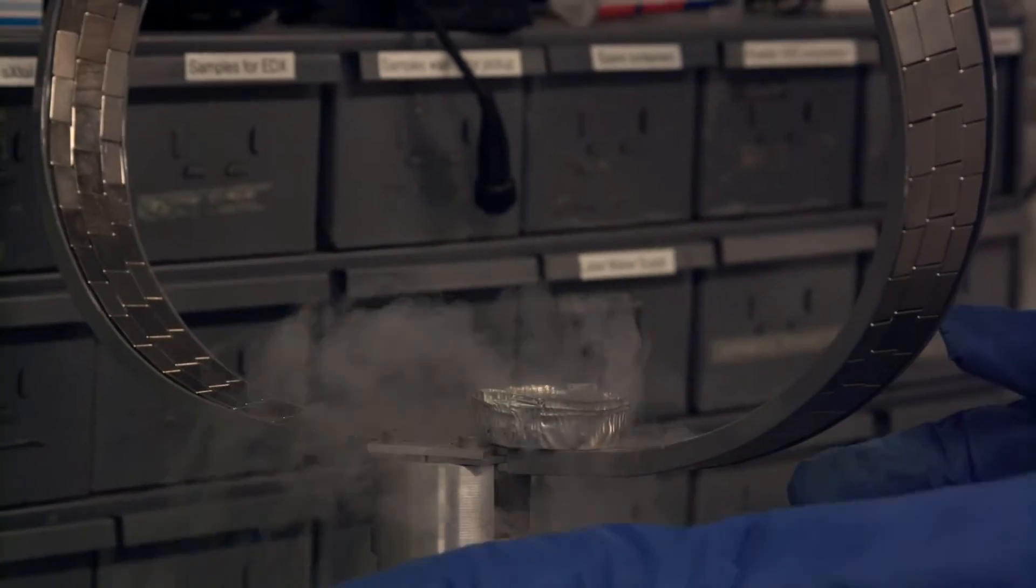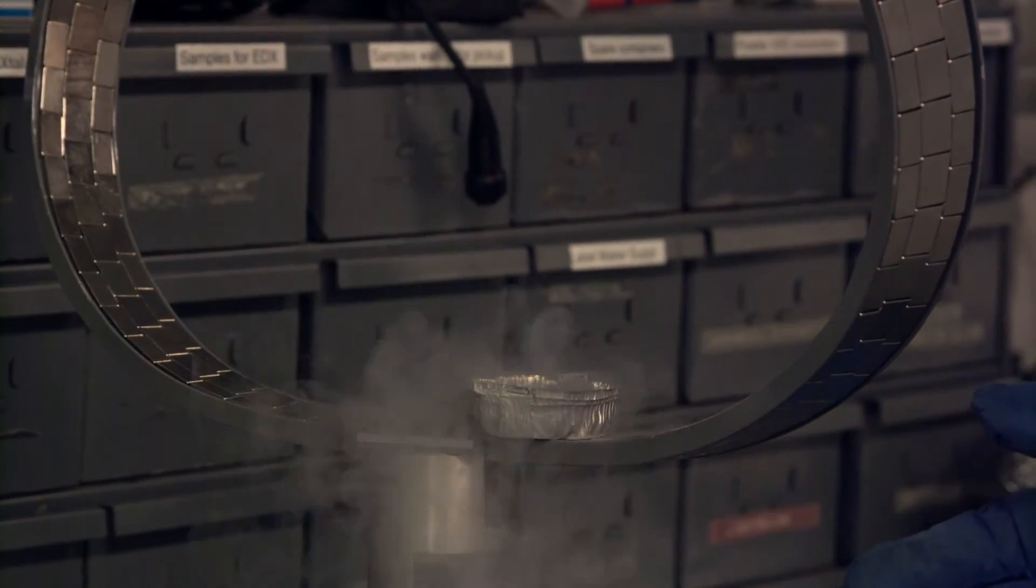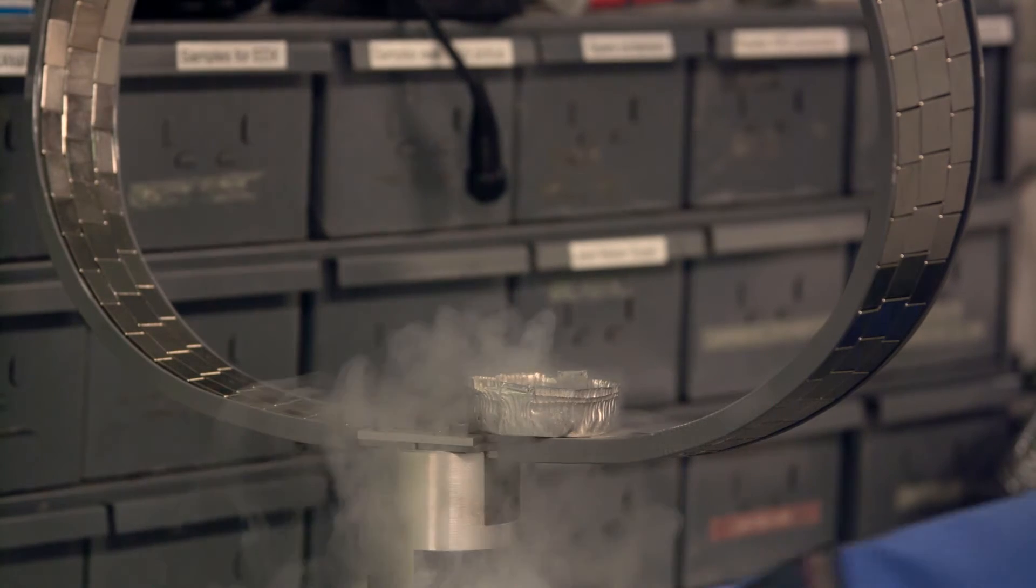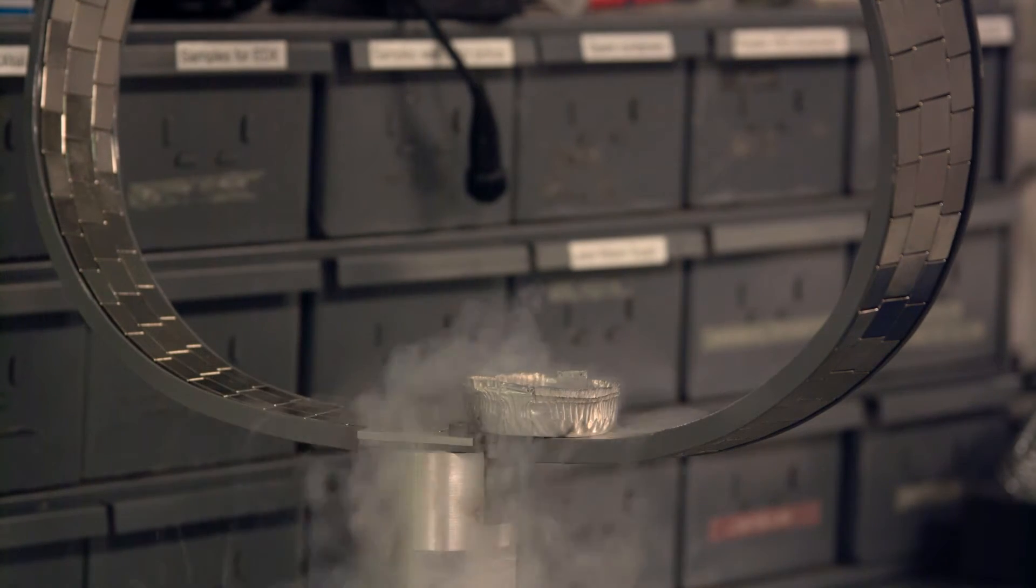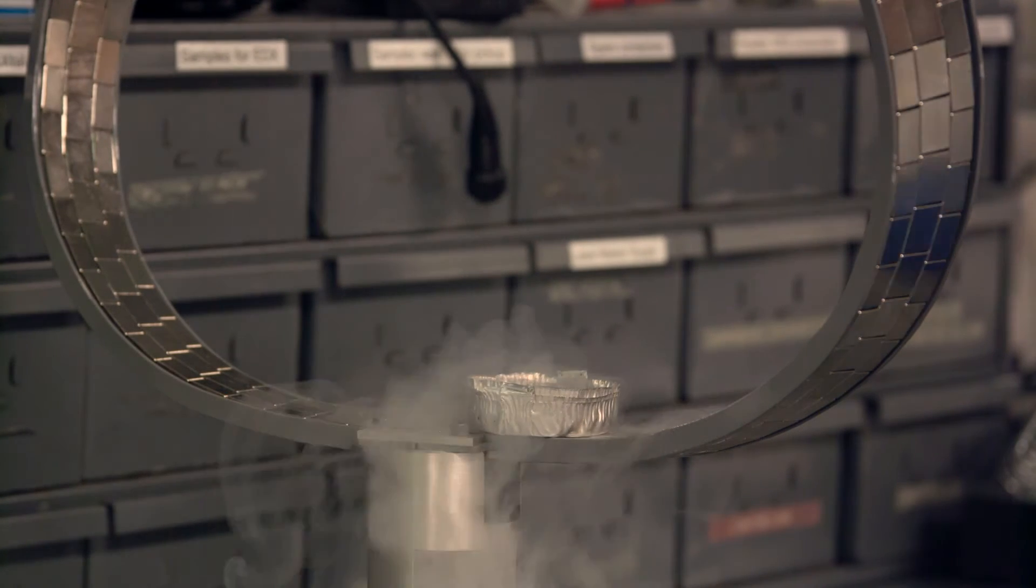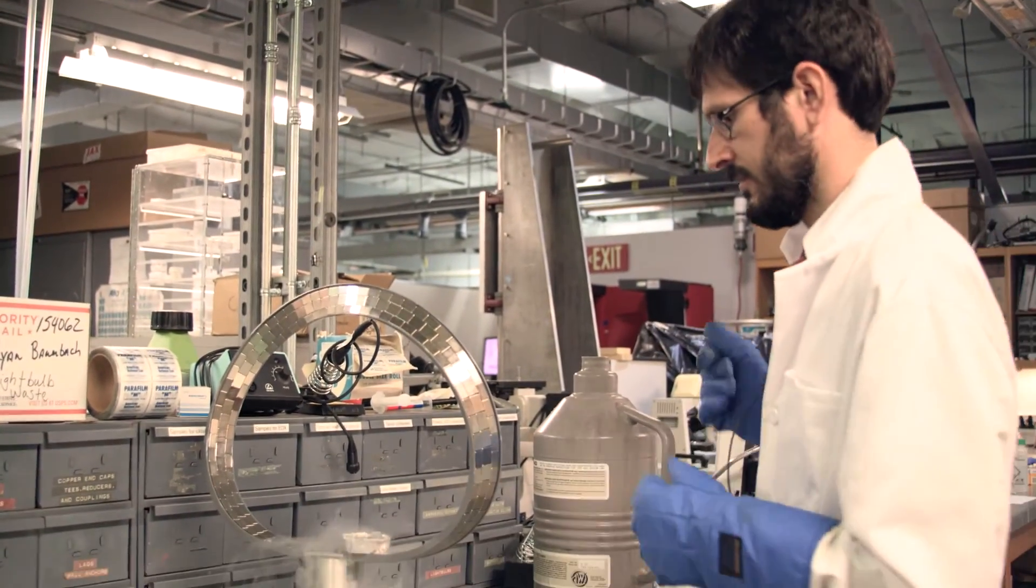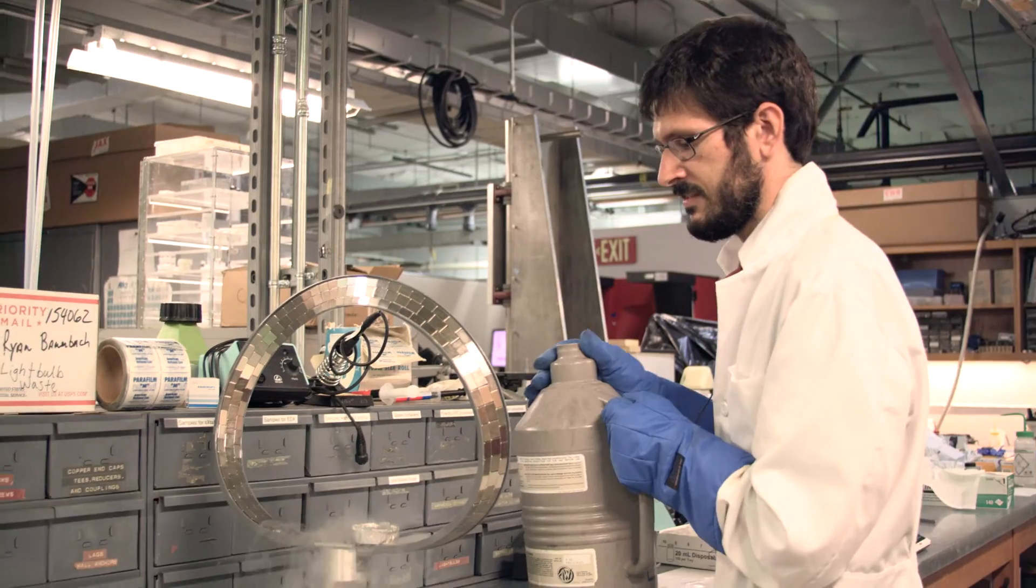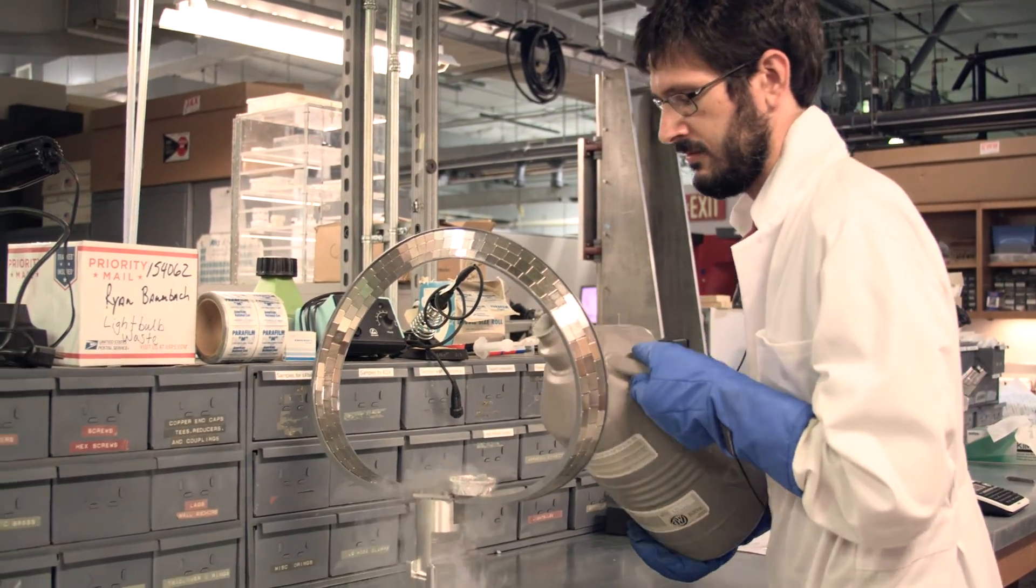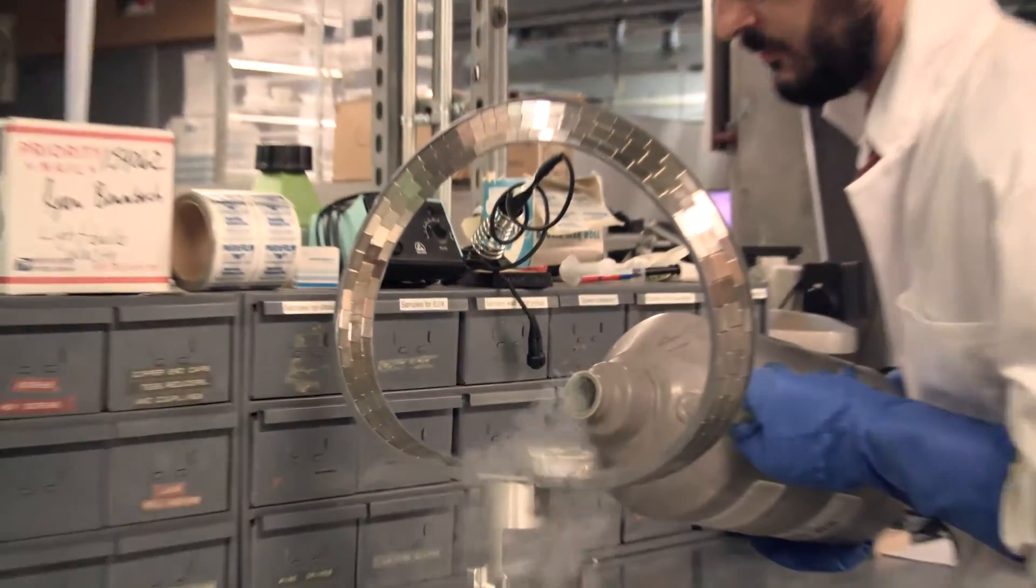We also see sort of a mist coming off of this. And at least partly, that's some condensation coming out of the air. Some of it's liquid nitrogen boiling off too. So it takes a little bit of effort to cool down the superconducting puck.